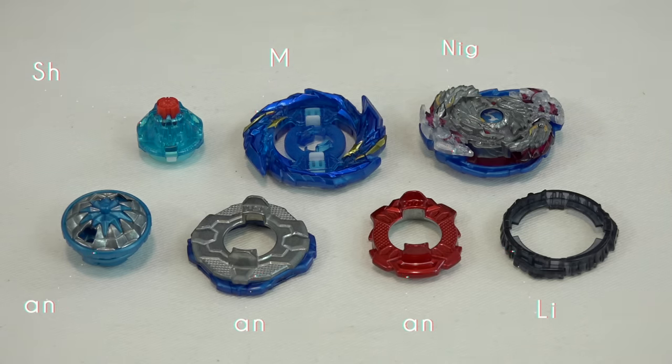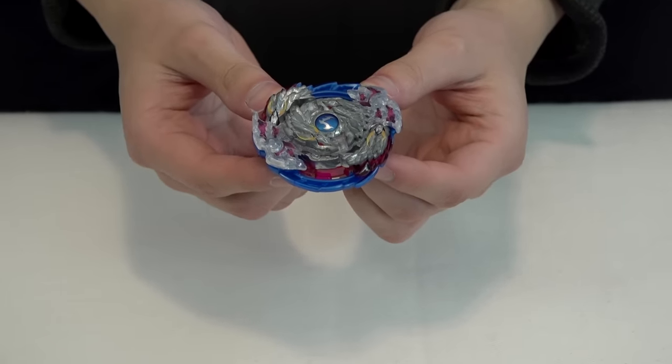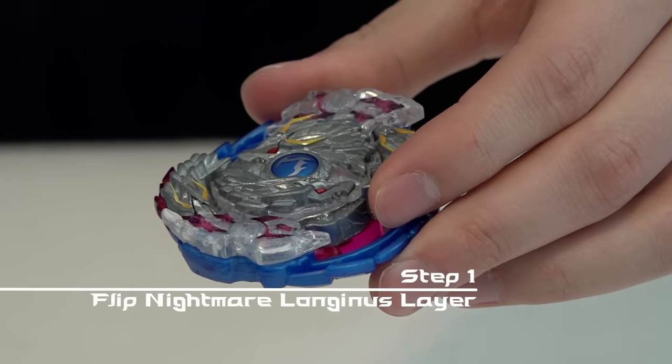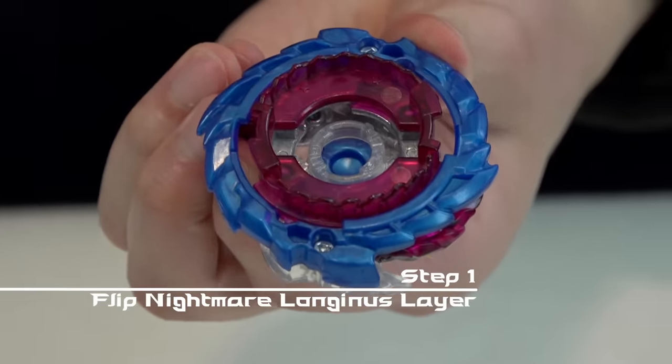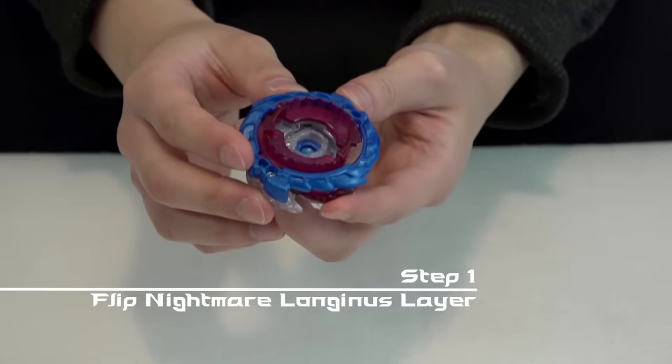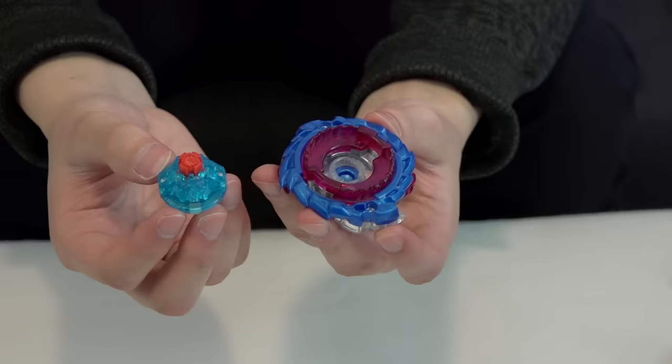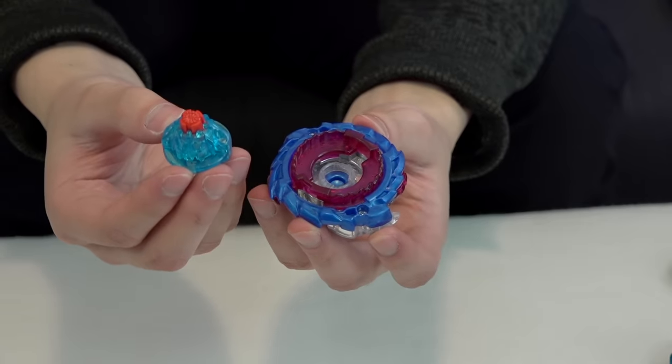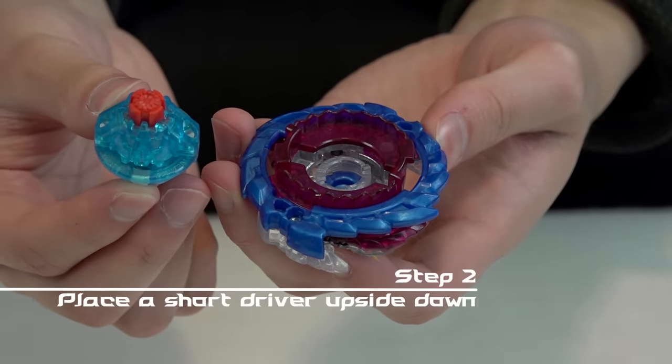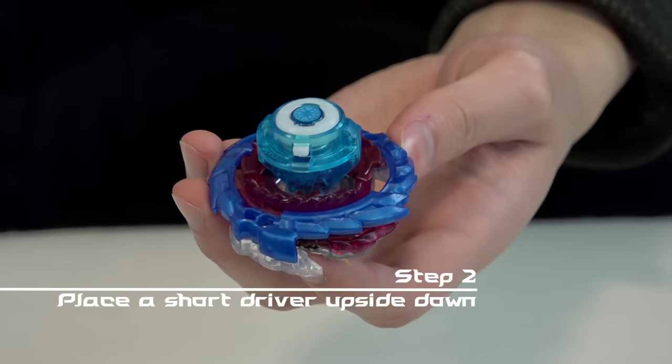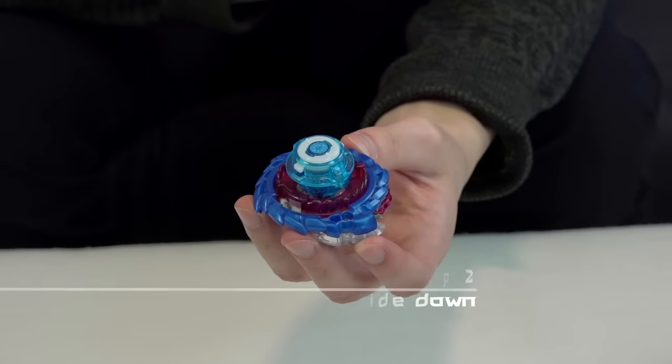Step one, you're going to need Nightmare Longinus because we need to exploit this design. This design from Nightmare Longinus has the layer and disc combined. So what you want to do is flip it upside down, that's your first step. Step two, you're going to find a driver. I have this Evolution driver and you want to place this driver upside down. It doesn't really make sense right now but you're going to see why we want to do this. You're going to want to place it on the back of the layer.